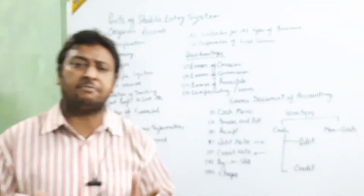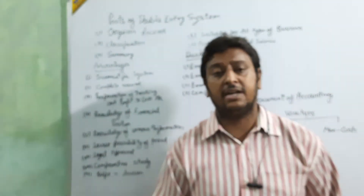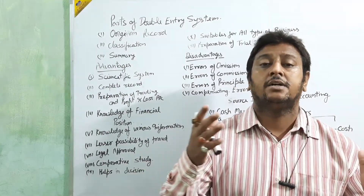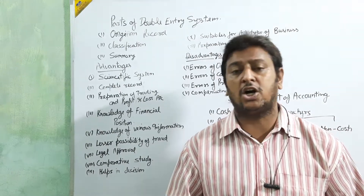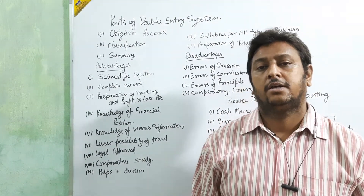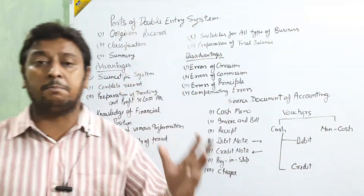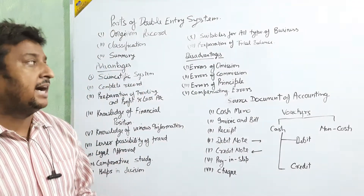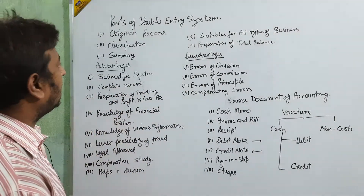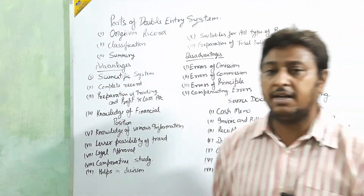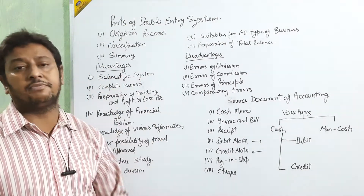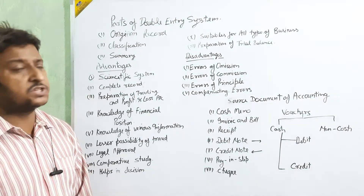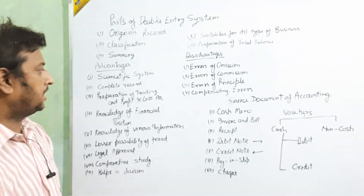Next is summary. After making the ledger, we take the balance of that ledger and make the trial balance. The balance we take from the ledger is called the summary — for example, the balance of the cash account is the summary of the double entry system, representing all transactions in a business.